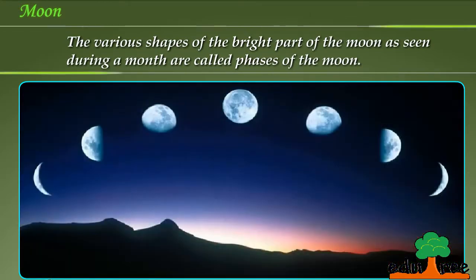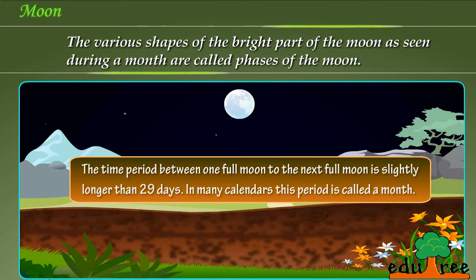The various shapes of the bright part of the moon as seen during a month are called phases of the moon. The time period between one full moon to the next full moon is slightly longer than 29 days. In many calendars this period is called a month.